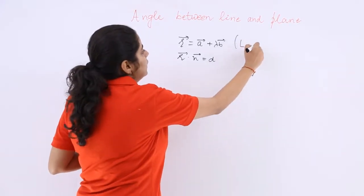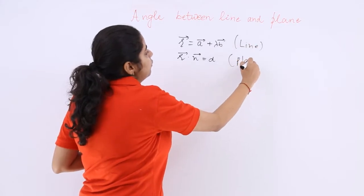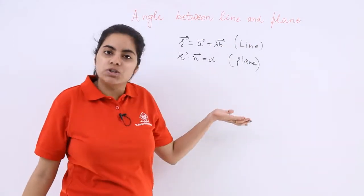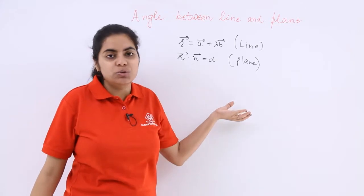One is the equation of a line, the other is the equation of a plane. Now what should be the angle?